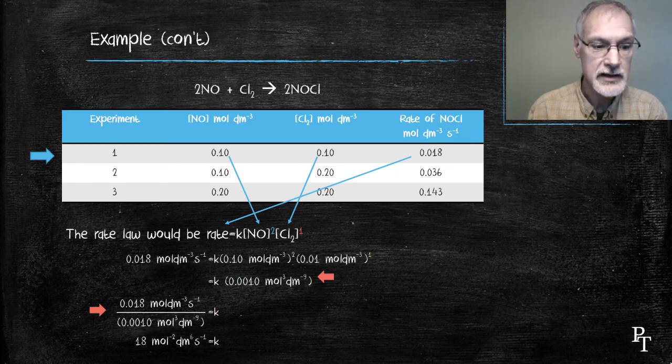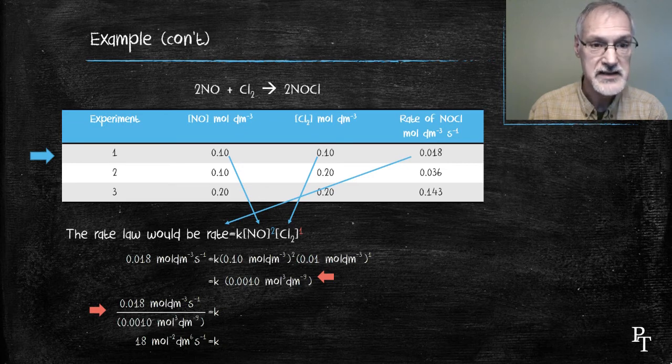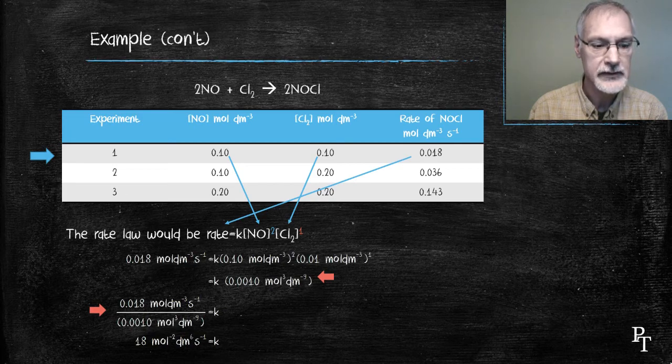Similarly, decimeters to the minus 3 on top, decimeters to the minus 9 on the bottom. When I subtract those exponents, I arrive at decimeters to the positive 6.